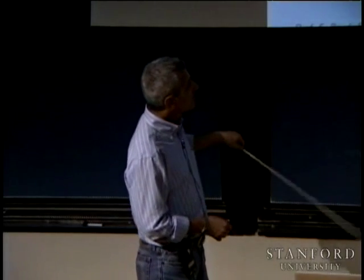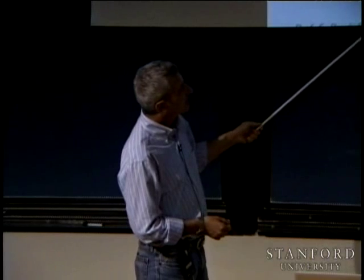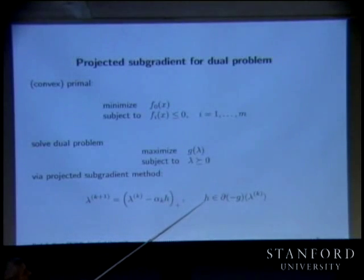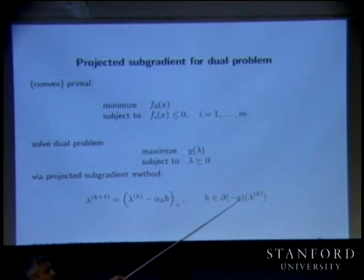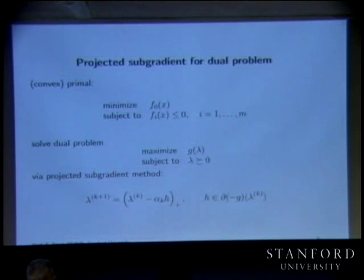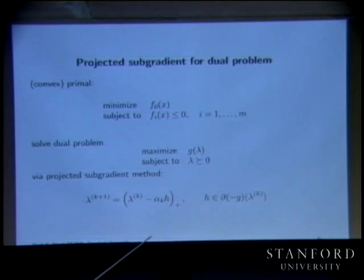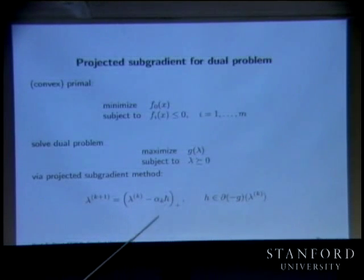Projection on the non-negative orthant is completely trivial — you just take the positive part of the vector component by component. So the update is going to look like this: you find a subgradient of minus G, and then step in the negative subgradient direction.